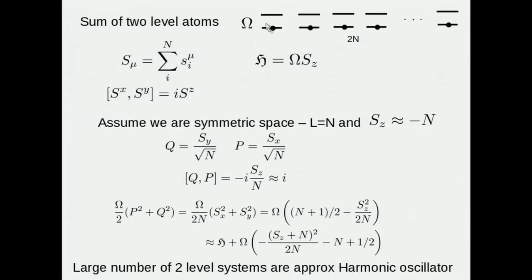But it doesn't really matter because a bunch of two level systems act like a harmonic oscillator. So here I have, for example, two N of these two level systems, frequency separated by frequency omega. S is the spin, one half of sigma. And we have the commutation relationships between these spins, is the usual commutation relation. Now let's say that we just want to look at the symmetric space. In other words, the space in which we basically have the maximum total angular momentum of the system, L, which is just equal to N.